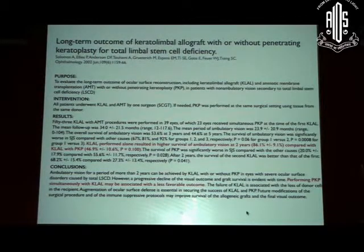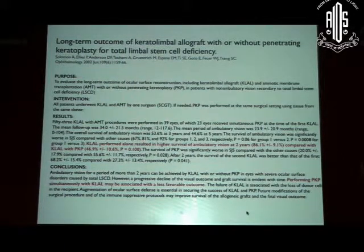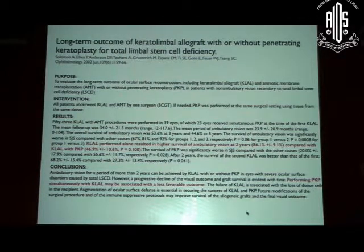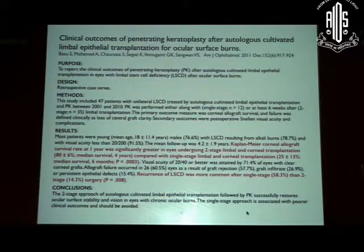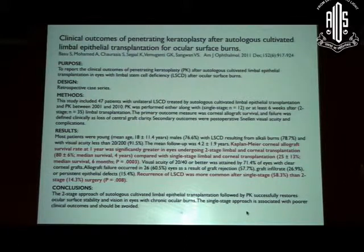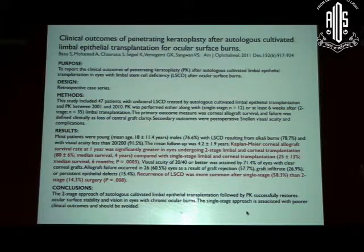Looking at papers examining outcomes of surface reconstruction with or without penetrating keratoplasty — either at primary surgery or done later — they found that when you combine with penetrating keratoplasty, the limbal stem cell graft does not survive as well compared to doing a limbal transplant first followed by penetrating keratoplasty later. A paper from LV Prasad by Dr. Sangwan also found that when combining autologous cultivated limbal stem cell transplantation with primary keratoplasty versus doing keratoplasty two months later, recurrence of limbal stem cell deficiency was much higher with the combined primary approach.